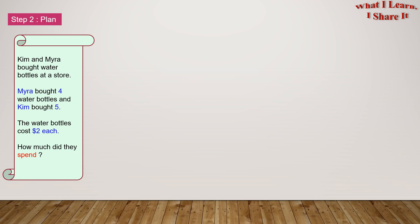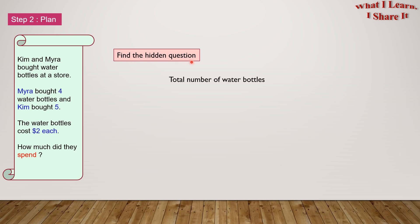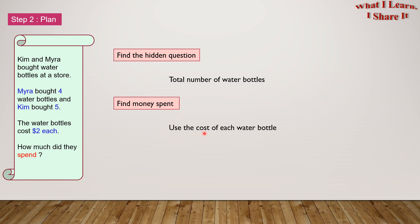So here's our plan. We will find the hidden question, which is the total number of water bottles. Then we will find the money spent, for which we will use the cost of each water bottle.